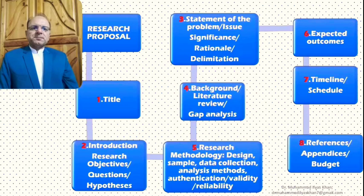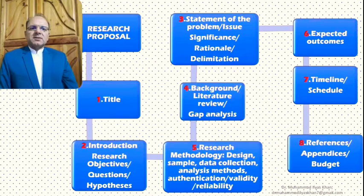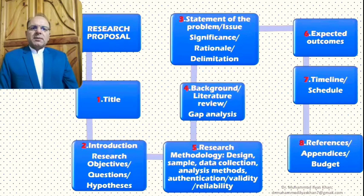References are of course necessary, because in the background, literature review, and methodology sections we use references, and details of those references should be given at the end in the form of a references section. Some research proposals might also have appendices — for example, the research tools used — and some researchers may include those in appendices. Appendices might also include budgeting for the research process, which is particularly relevant if the research is funded.